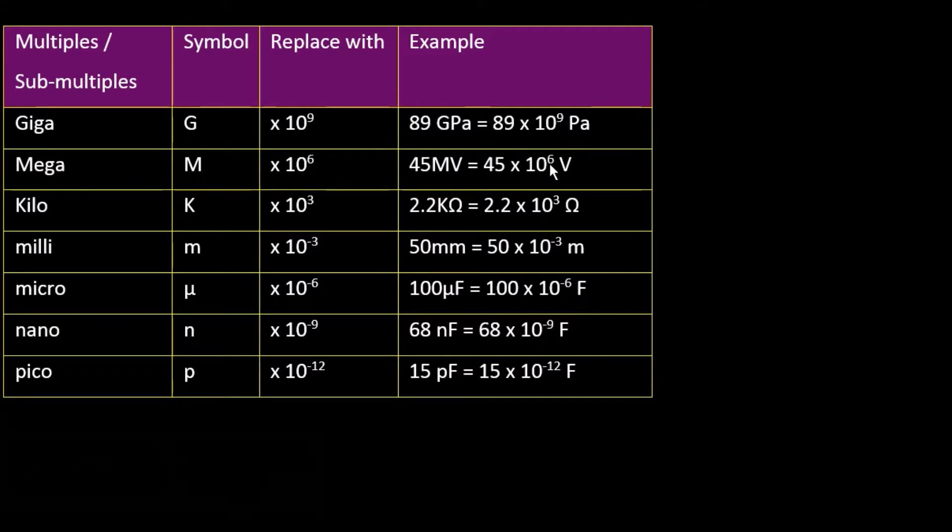The M for Mega, replace it with 10 to power 6. The K for Kilo, replace it with 10 to power 3. So just in your calculation, on your calculator, just replace it. Milli, 10 to power minus 3. Micro, 10 to power minus 6. Nano, 10 to power minus 9. And Pico, 10 to power minus 12.